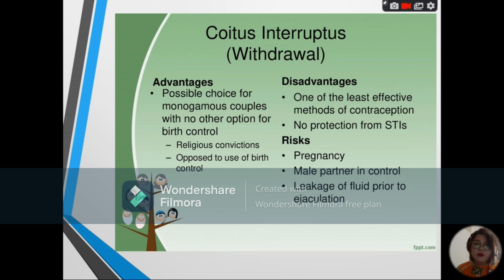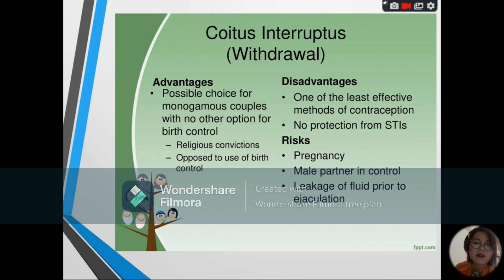Next, we have coitus interruptus, or simply called withdrawal. This is when the man withdraws before ejaculation so that the spermatozoa are emitted outside of the female genital organ. One of the disadvantages of this method is that pre-ejaculation fluid contains a few spermatozoa that might also cause fertilization.